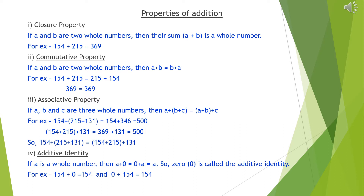Third, associative property. It states that if a, b, and c are three whole numbers, then (a plus b) plus c is equal to a plus (b plus c). In this property, we can change only the sequence of the brackets. For example, 154 plus (215 plus 131): first we add the last two numbers to get 346, then add 154 to get 500. In the second step, we add 154 plus 215 to get 369, then add 131 to get 500. In both steps, we get the same sum.